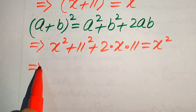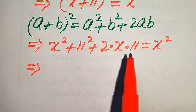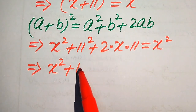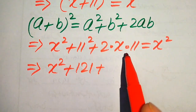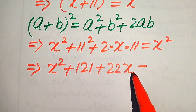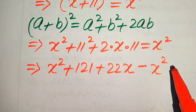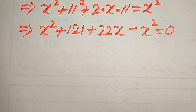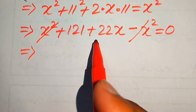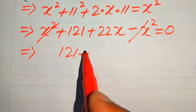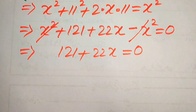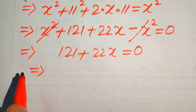Now we move x² to the left-hand side. It becomes x² + 121 + 22x − x² = 0. The positive x² and negative x² cancel out, and we get 121 + 22x = 0.